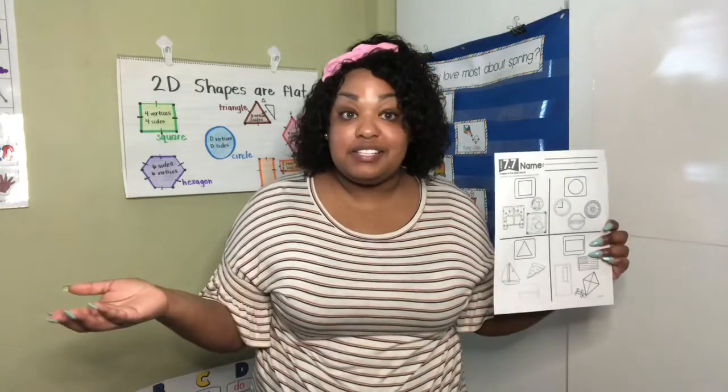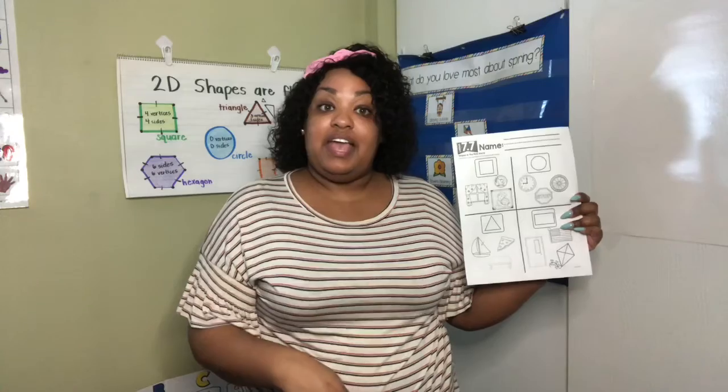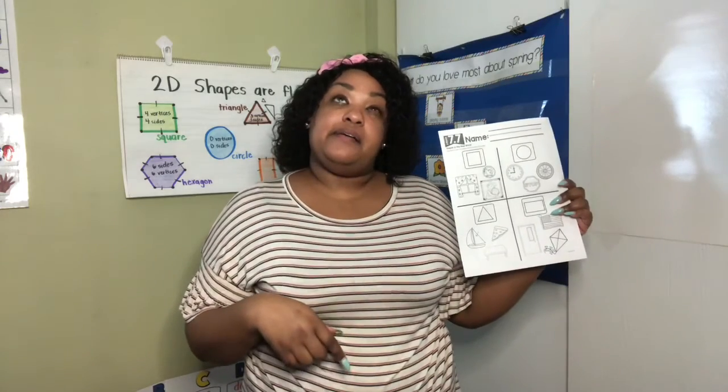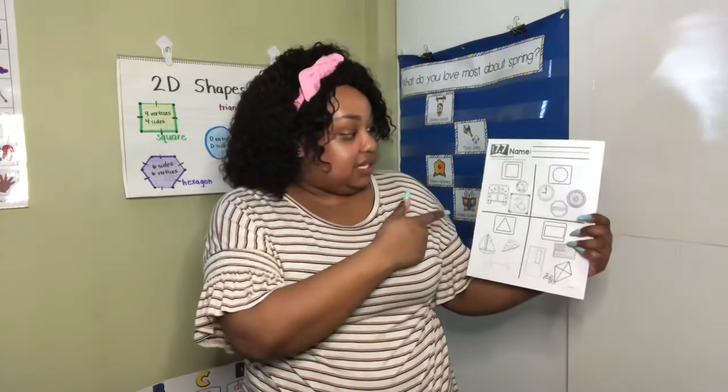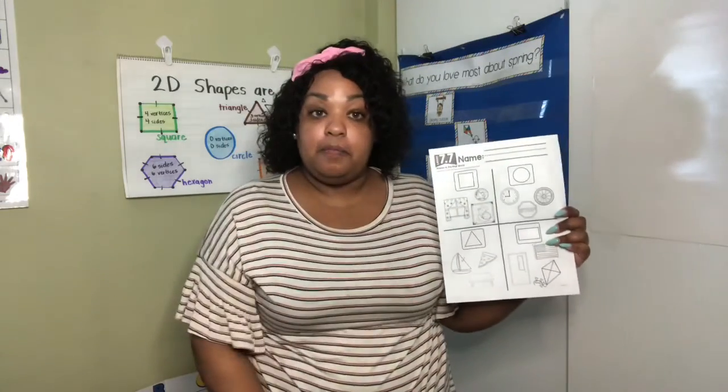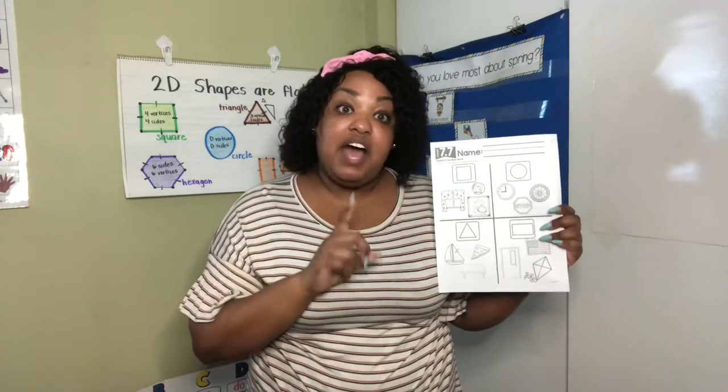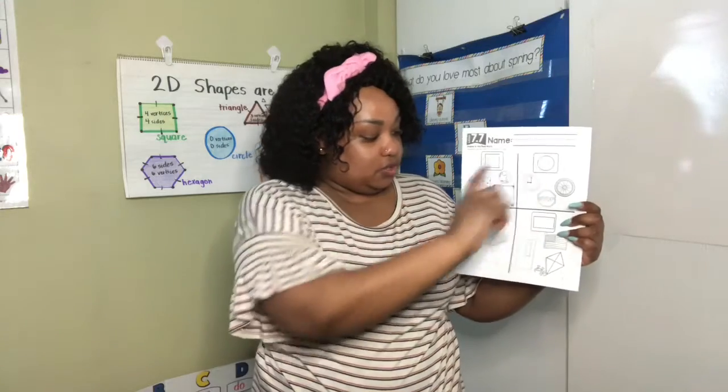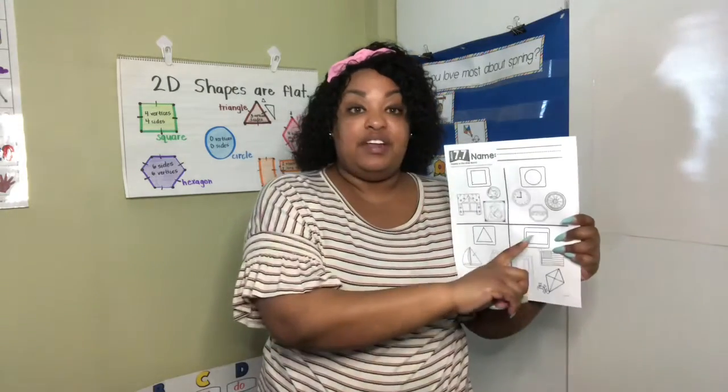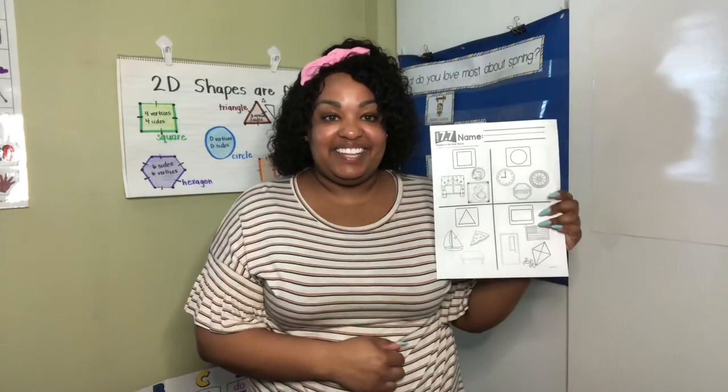So if this is a square, only color the things that look like a square. A cracker looks like a square. So if you see a cracker, you would color it. A TV looks like a square. So if you see a TV, you would color it. And then I want you to go around your house and find something that looks like a square, a circle, a triangle, and a rectangle in your house.